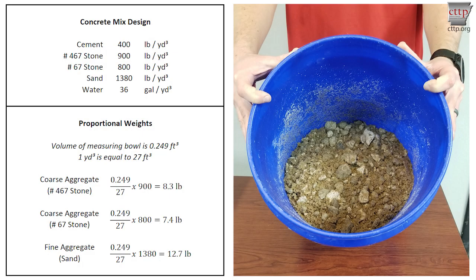if the volume of the measure is 0.249 cubic foot and the mix design says to use 900 pounds per cubic yard of coarse aggregate, divide 0.249 by 27 — the number of cubic feet in a cubic yard — and then multiply by 900. The result of 8.3 pounds is how much coarse aggregate is needed for the batch. Do this for all aggregates and combine the weighed portions.